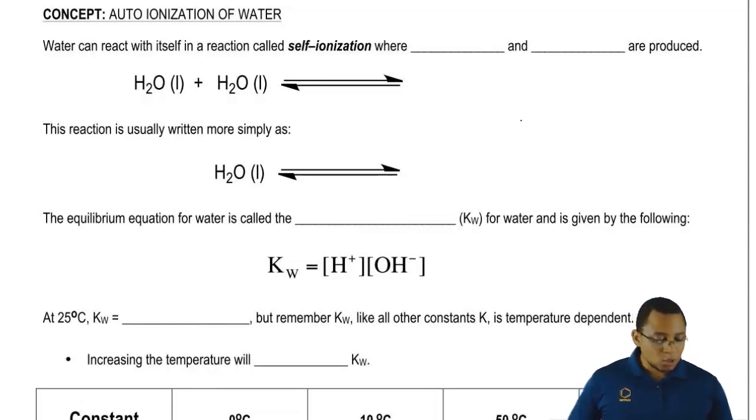In this process, we're going to create H3O plus and OH minus. How does this happen? For this to occur, one of the water molecules has to act as an acid and the other one has to act as a base.